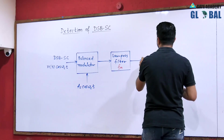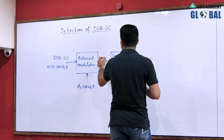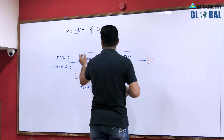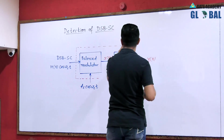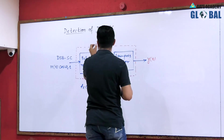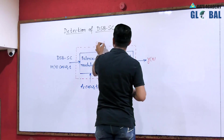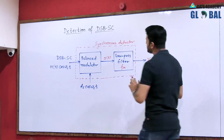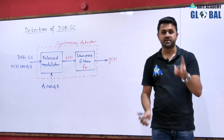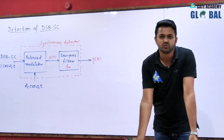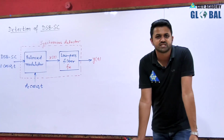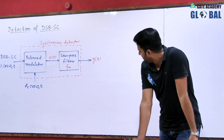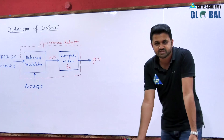Let us represent the output by y(t) and the input to the LPF by x(t). The whole block combining the balanced modulator and the low pass filter is called the synchronous detector. If you see 'synchronous detector' written in a block, it means you have to perform two operations: first multiplication, then filtering by a low pass filter.